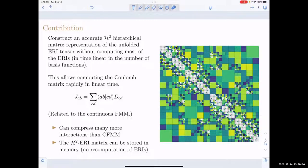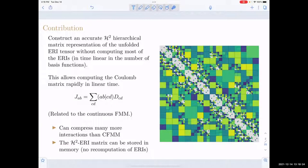Once we have an H2 hierarchical matrix, we can compute matrix-vector products with it very rapidly. This means that we can compute the Coulomb matrix in linear time. This is obviously related to the continuous fast multipole method, but the advantage when using this H2 hierarchical matrix representation is that it can compress many more interactions than CFMM — so many fewer white blocks.